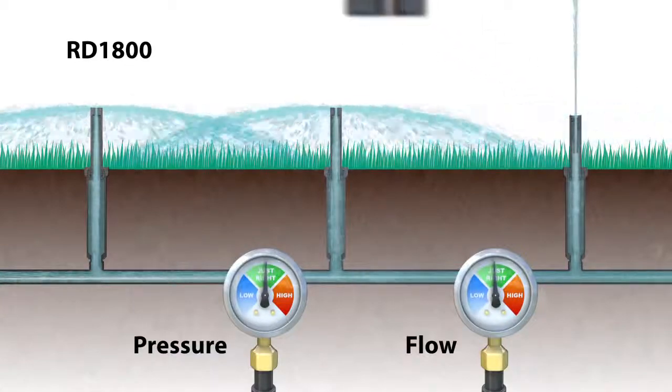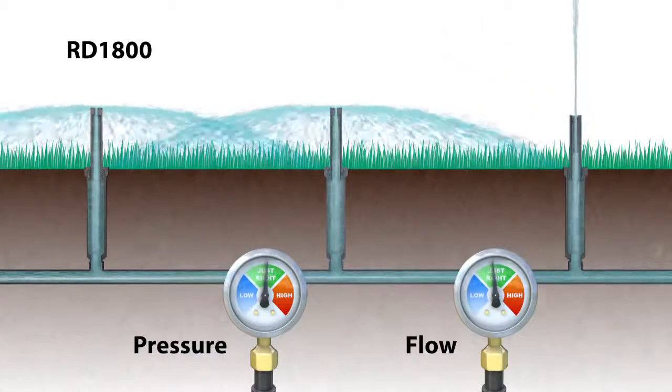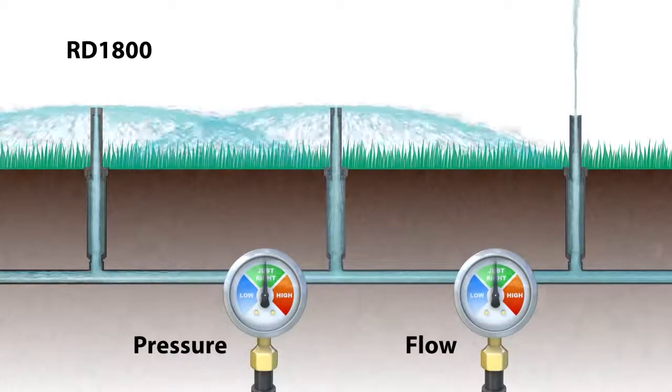When a nozzle is removed, the RD1800 not only saves water, it also preserves the hydraulics for the rest of the system.